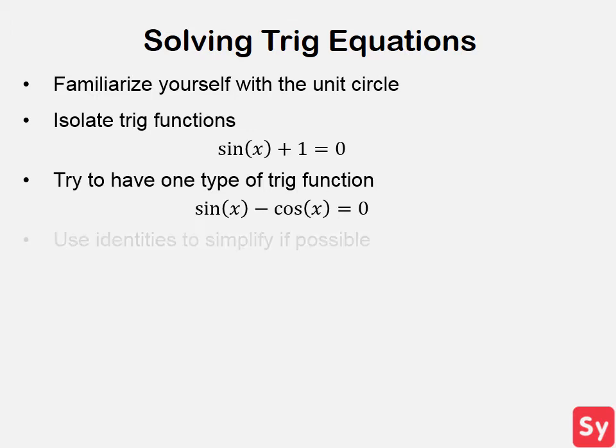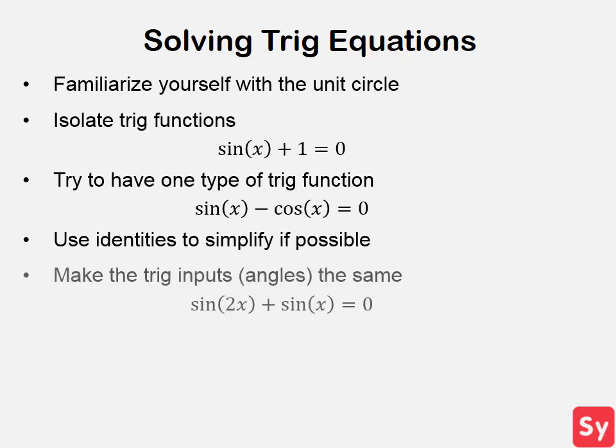Next, use trig identities if possible. This will help simplify the problem and make it easier to solve. Also, make the trig inputs — which are the angles in terms of x — the same. For example, if you have sine of 2x plus sine of x equals 0, try to make the angles the same by making them both sine of x using identities.